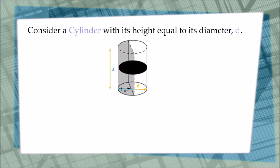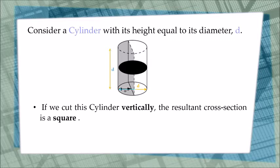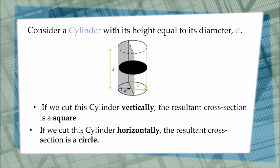Consider a cylinder with its height equal to its diameter, D. If we cut the cylinder vertically, the resultant cross section is a square. If we cut the cylinder horizontally, the resultant cross section is a circle.